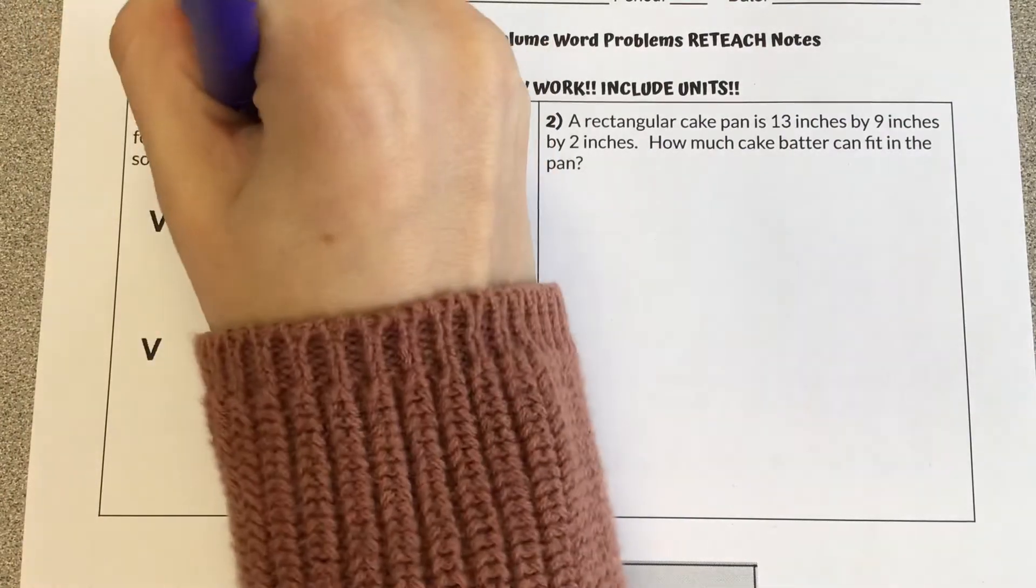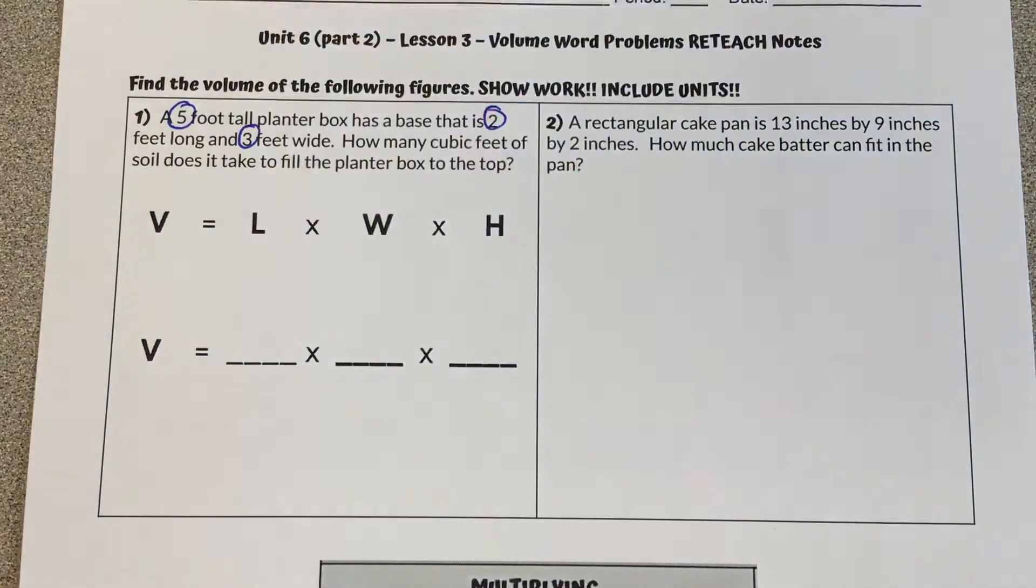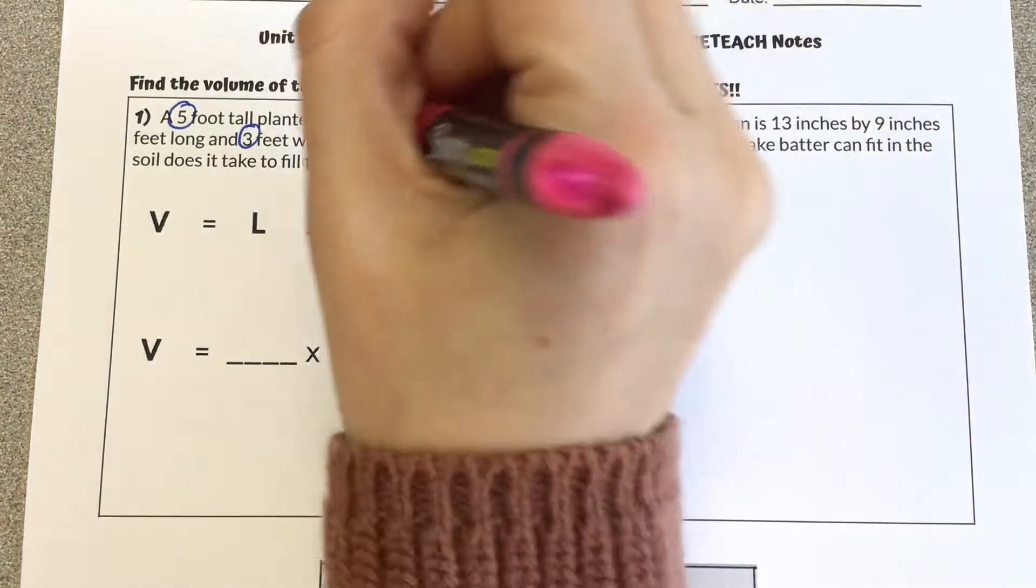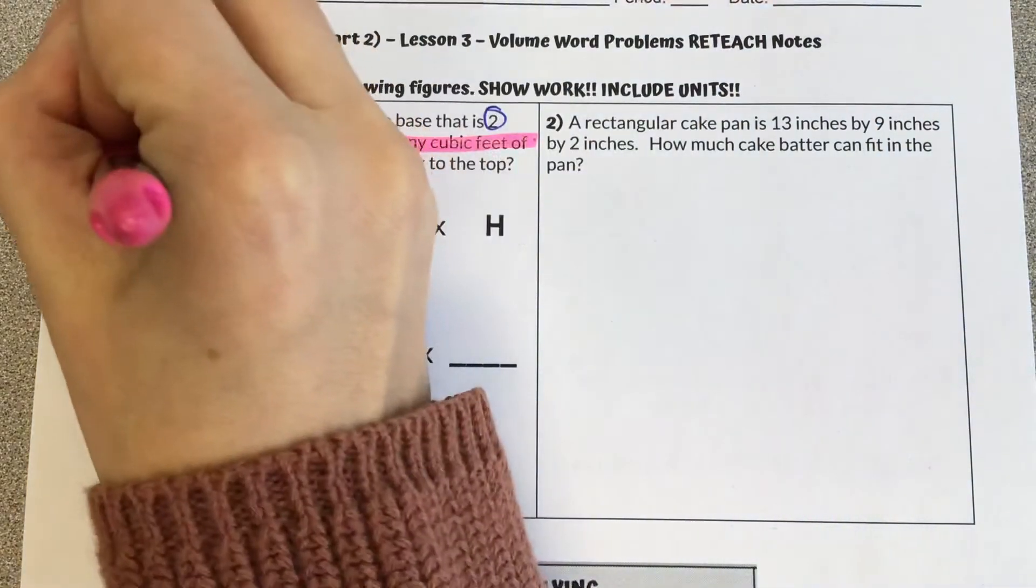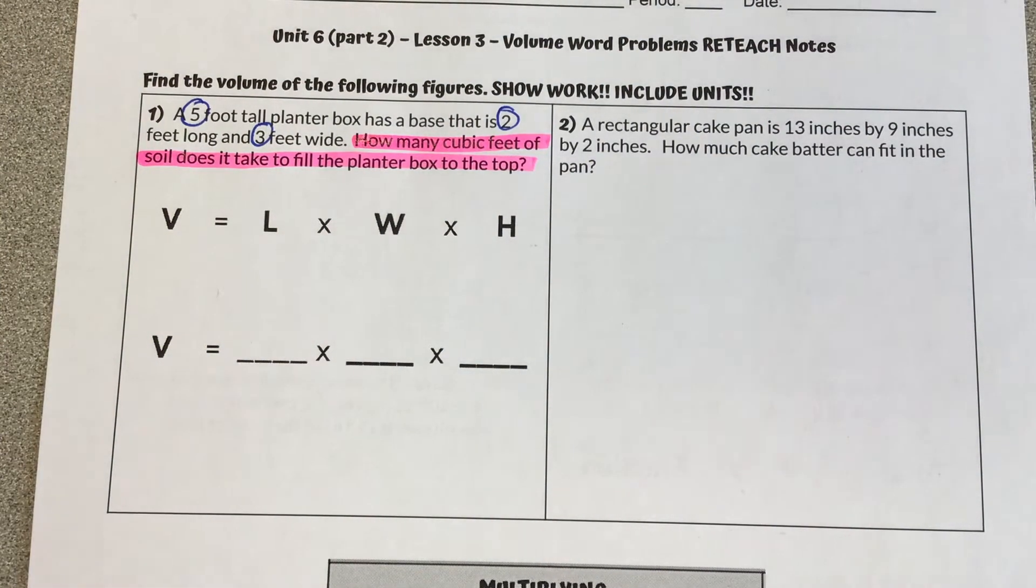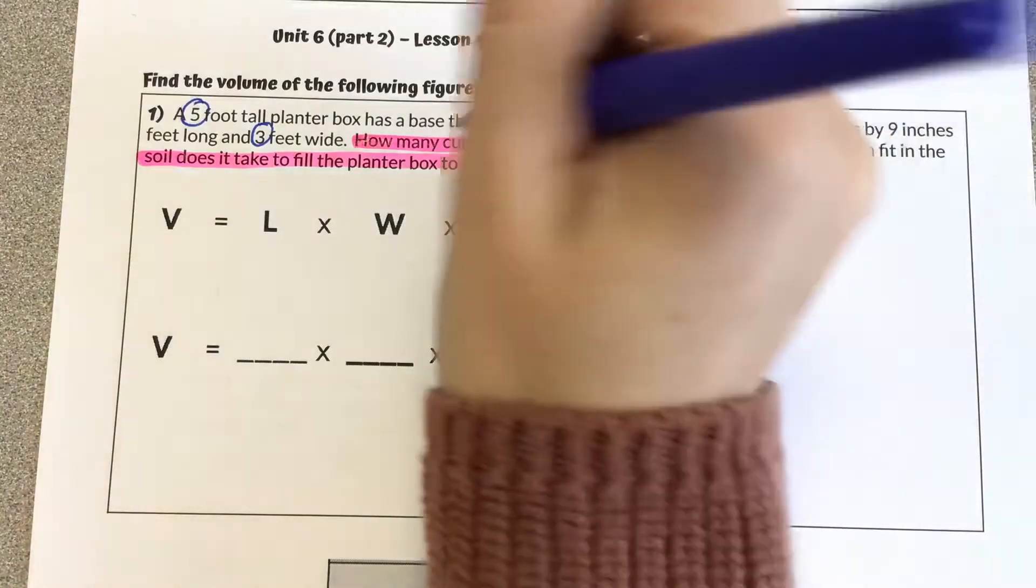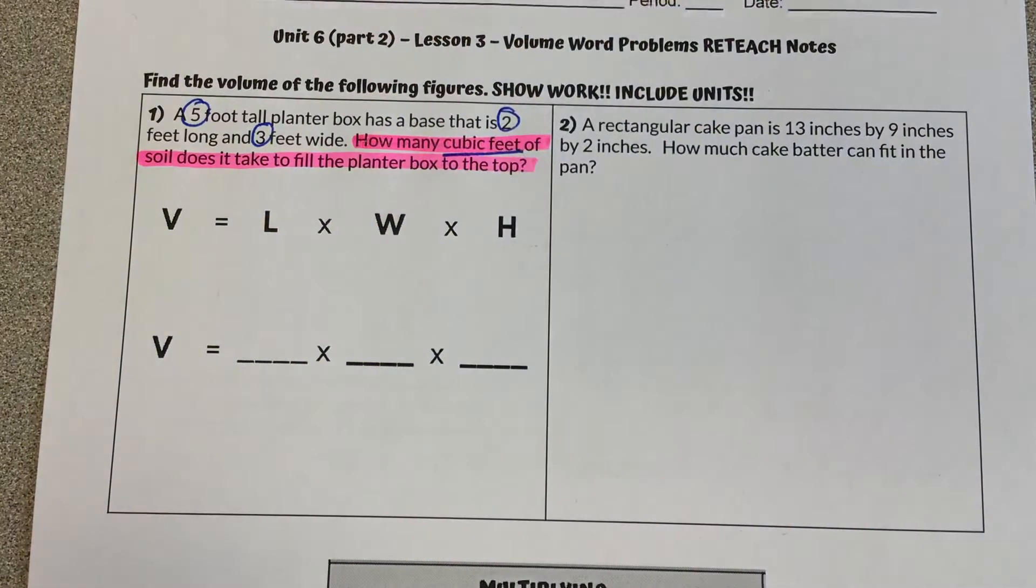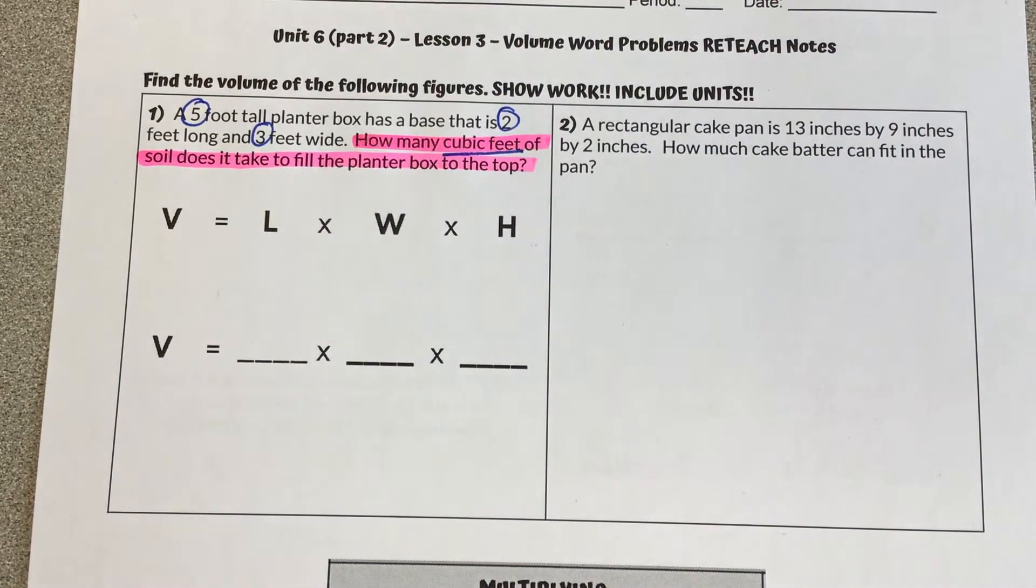So first off, I'm going to circle my numbers that are in the problem. And although this doesn't explicitly say that we are solving for volume, I'm going to look at the question, which says, how many cubic feet of soil does it take to fill the planter box? So there's two clues here. Cubic feet tells me that we are talking about something to the third power, which is volume.